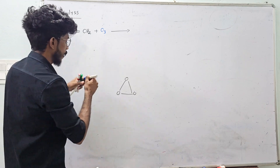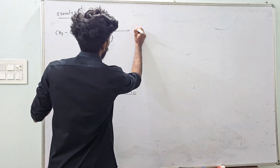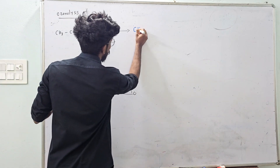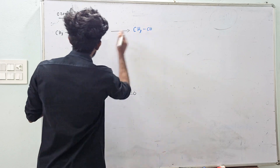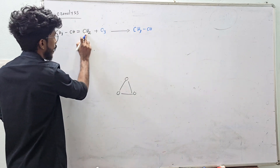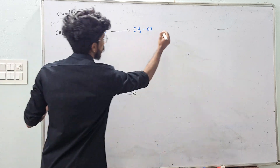Here we have CH3CH double bond CH2. The double bond is present in CH2.